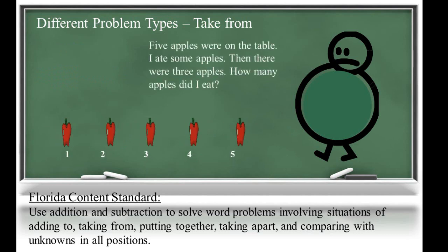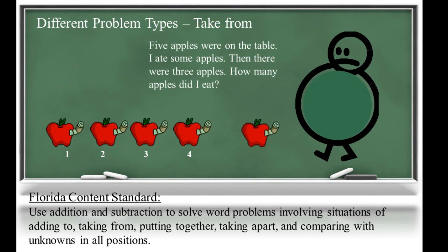In the second problem, five apples were on the table. I ate some apples. Then there were three apples. How many apples did I eat? Here we know how many we start with and how many we have at the end, but we don't know the change. So students will need to determine what amounts changed when subtracting five minus two equals three.